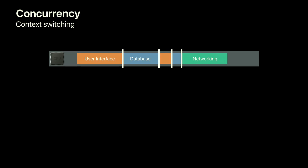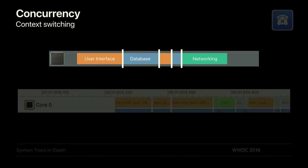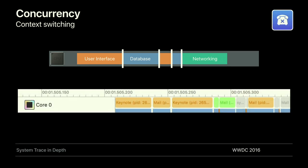Let's look at what this looks like to the CPU. The white lines show the context switches between subsystems — when the CPU switches between different threads making up your application. If you want to visualize this, you can use Instruments System Trace, which shows what the CPUs and threads are doing when running your application. This concept of context switching is where the power of concurrency comes from.